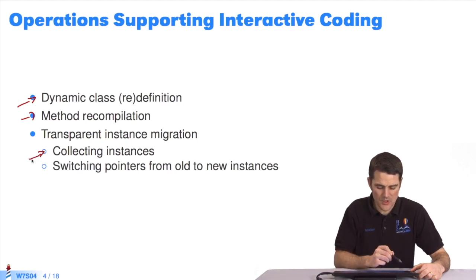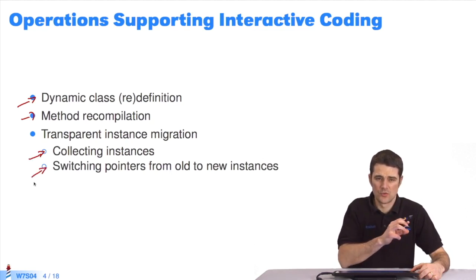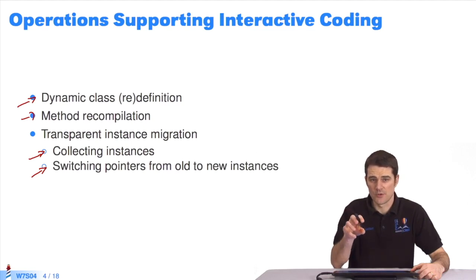To do this, we need to collect all the class instances. Then we need to switch over everything that use these objects, and assign their pointers to new objects.